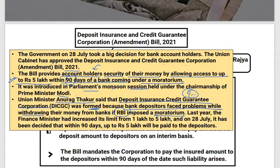This is the time for the Deposit Insurance Credit Guarantee Corporation. It is not that after the moratorium, the bank account holders' money is simply gone. No — within 90 days, almost 3 months, they can remove their money from the bank. Up to 5 lakh rupees will be paid to the depositors.